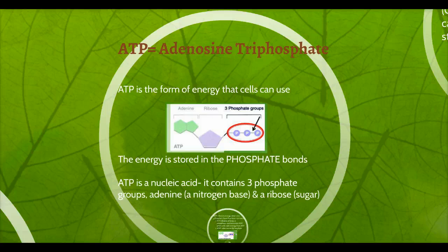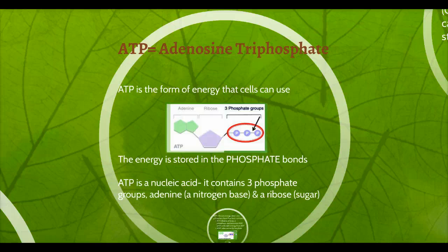We are specifically going to be talking about energy in the form of ATP. ATP is a type of nucleic acid — it stands for adenosine triphosphate. It is the form of energy that cells can use. We say that we provide our cells with energy when we eat things, and we talk a lot about the mitochondria breaking down glucose to give us that energy. Well, that glucose is still too big — our cells can't really use it. So it has to break down the glucose and convert it into ATP.